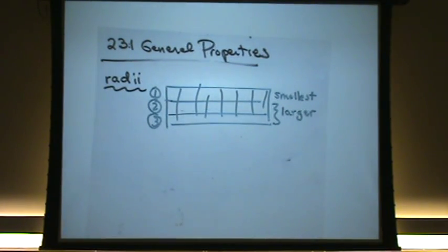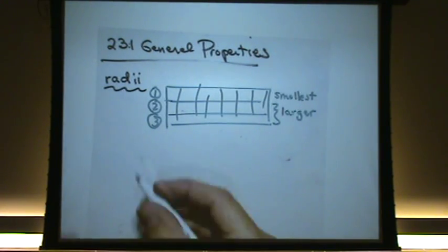The largest, however, the second and the third row happen to be the same size. And the reason for that is something called lanthanide contraction.